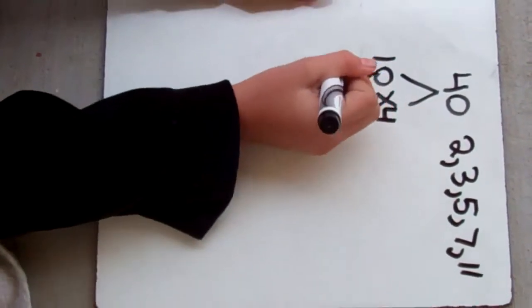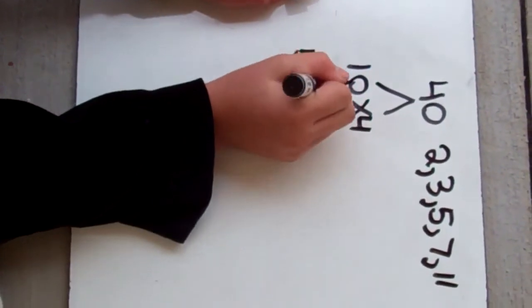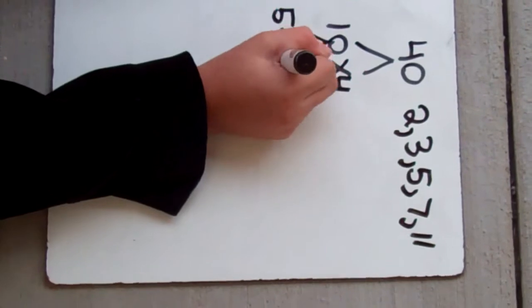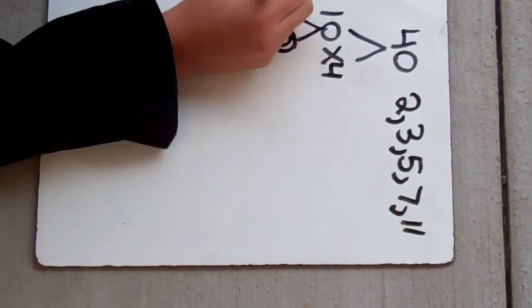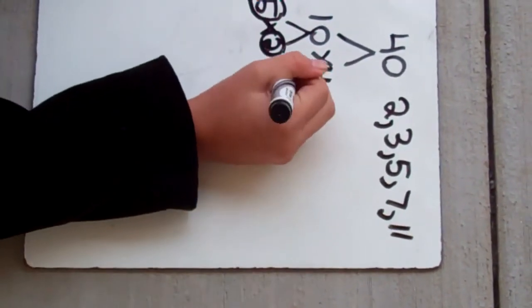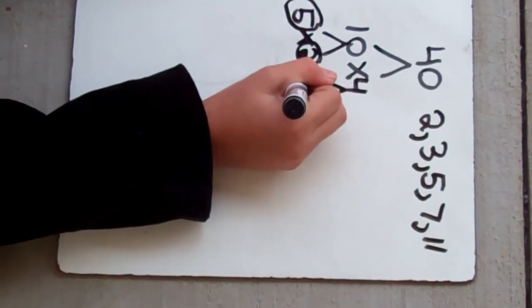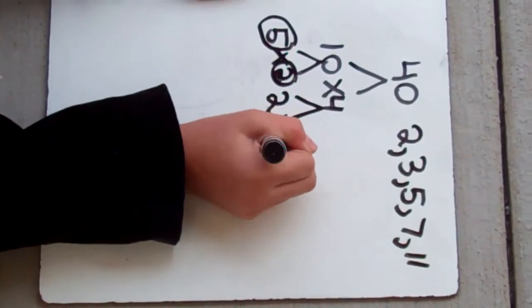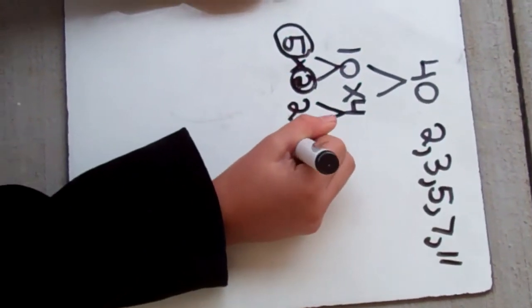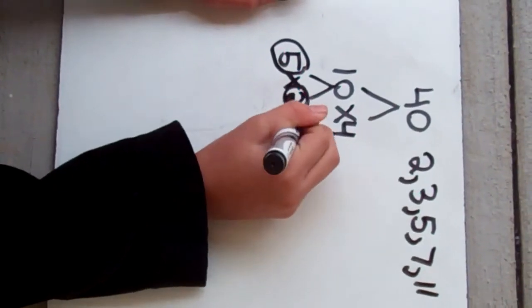Then I put five times two. I circle them because they're prime numbers. I have to circle the prime numbers. Then I put two times two. I circle them too because they're prime numbers.